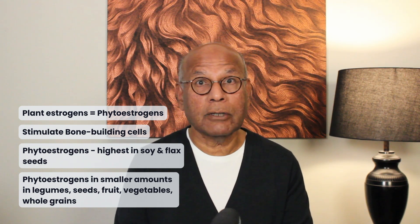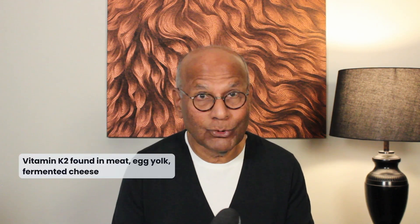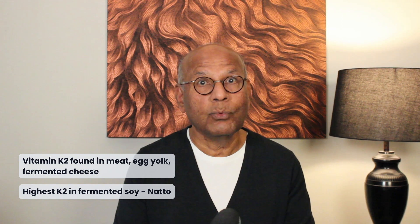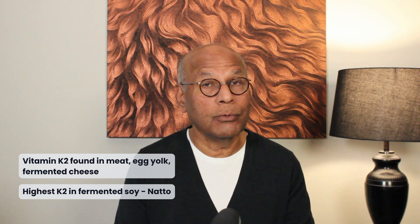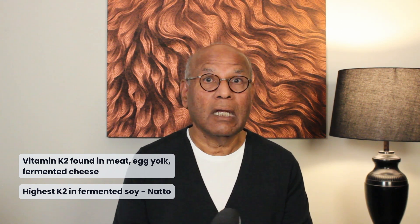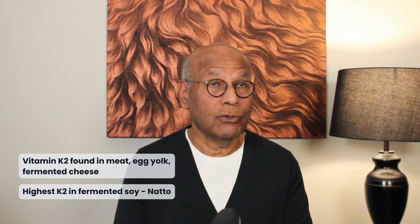Another positive effect of friendly bacteria is that they produce vitamin K2. K2 also occurs in animal-based foods like meat, egg yolk, and fermented cheese. The highest amount of K2 in food occurs in the traditional Japanese dish called natto, which is fermented soybean — natto can be found in Japanese grocery stores.